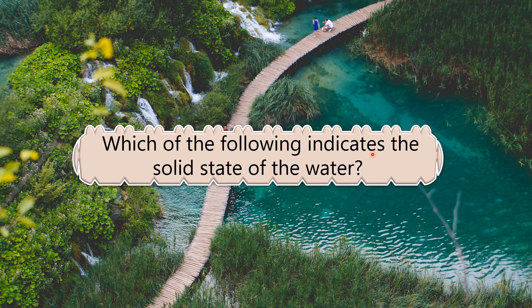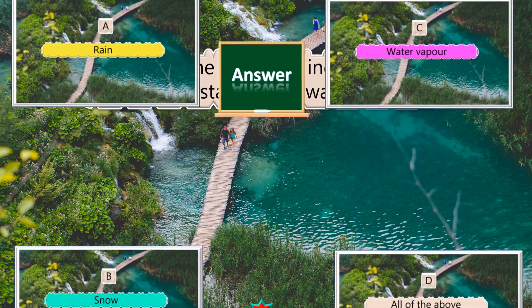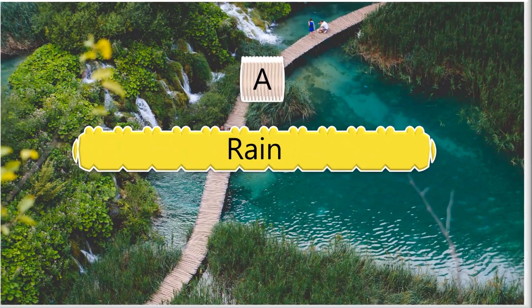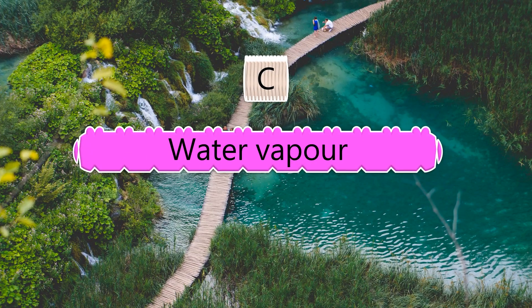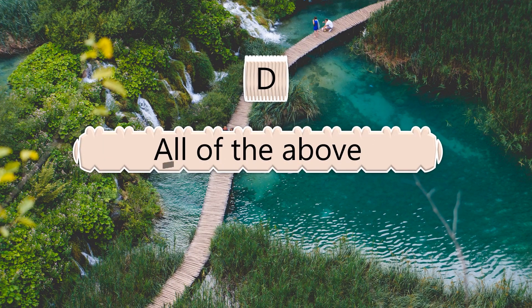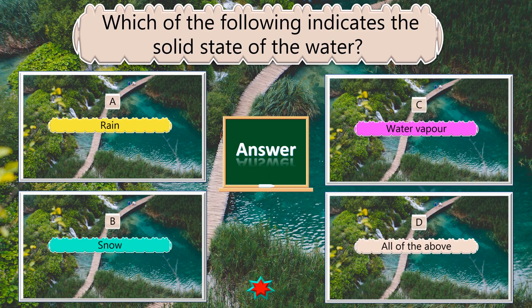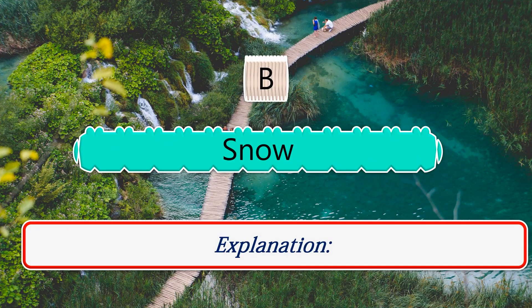Which of the following indicates the solid state of water? Options: rain, snow, water vapor, all of the above. The answer is snow.